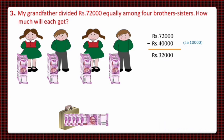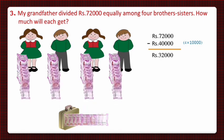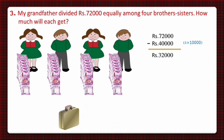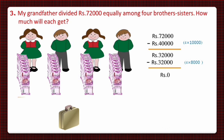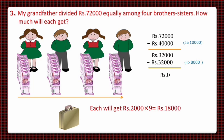Grandfather will now distribute the remaining 32,000. He gives four notes of 2,000 to each child, which is 8,000 rupees per child. Four into 8,000 equals 32,000, so he has distributed 32,000 equally among all children, and he is left with 0 rupees. In this informal method, each brother and sister received nine notes of 2,000, which equals 18,000 rupees.